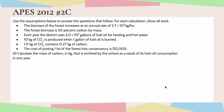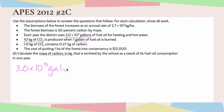Moving on to question number two. This asks us to calculate the mass of carbon in kilograms that is emitted by the school as a result of its fuel oil consumption in one year. To do that, we start with our given: each year the district uses 3.0 times 10 to the fifth gallons of fuel oil. Looking at our next given, we know that 10 kilograms of carbon dioxide is produced when one gallon of fuel oil is burned. So I'm going to put 1 gallon in the bottom and 10 kilograms of carbon dioxide on top.